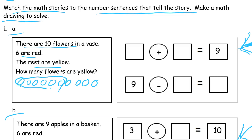If you know your parts of ten, you know how many are going to be left without counting. You know there's going to be four left. So these are red and these are yellow. What we need is a total of ten, and we know we need a six and a four with a total of ten.